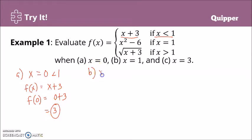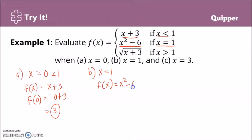Letter B: when x equals 1. Since x equals 1, we are going to use the second expression, x squared minus 6. So f(x) = x squared minus 6. Substituting, f(1) = 1 squared minus 6. 1 squared is 1. 1 minus 6 is negative 5.